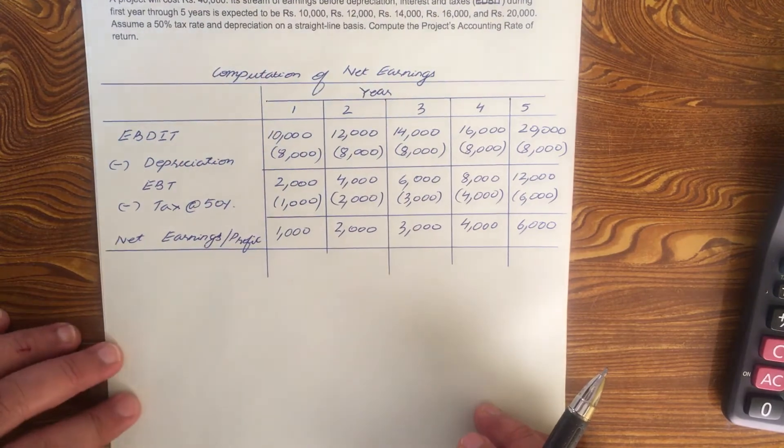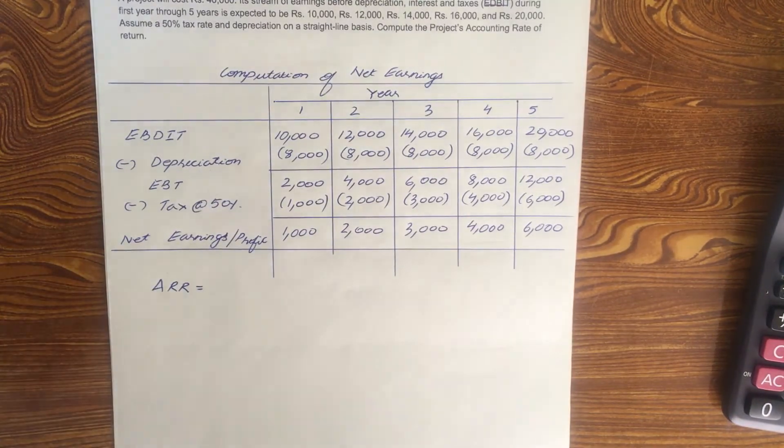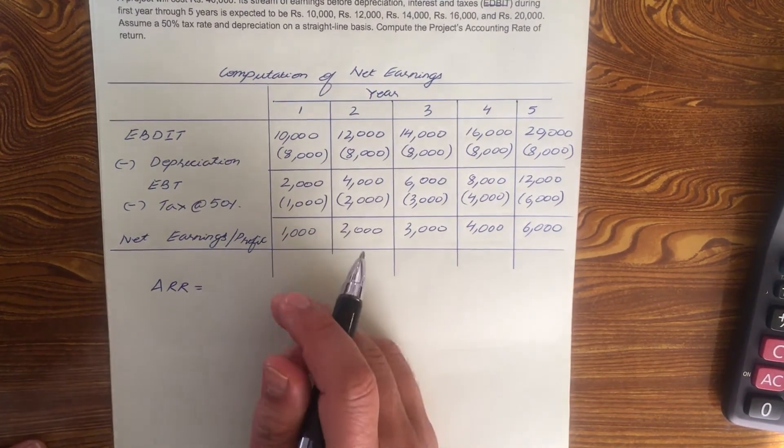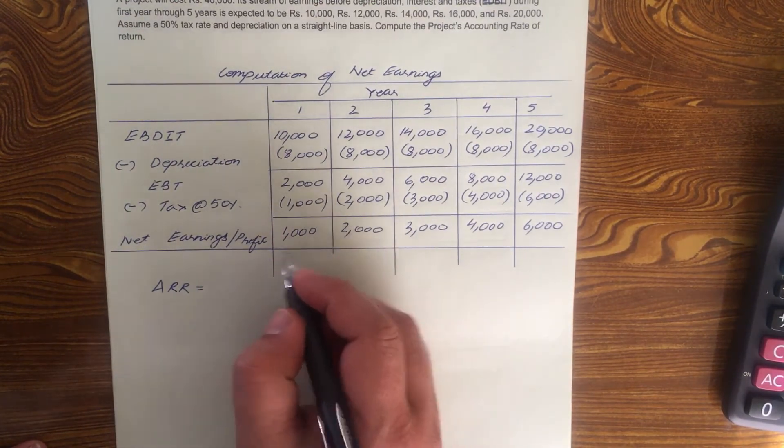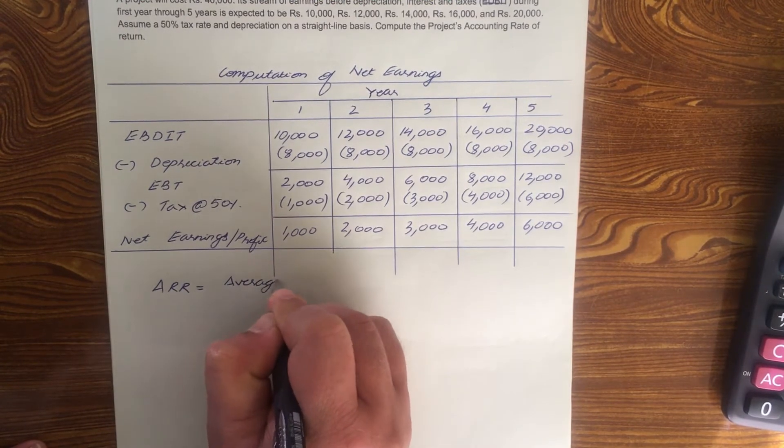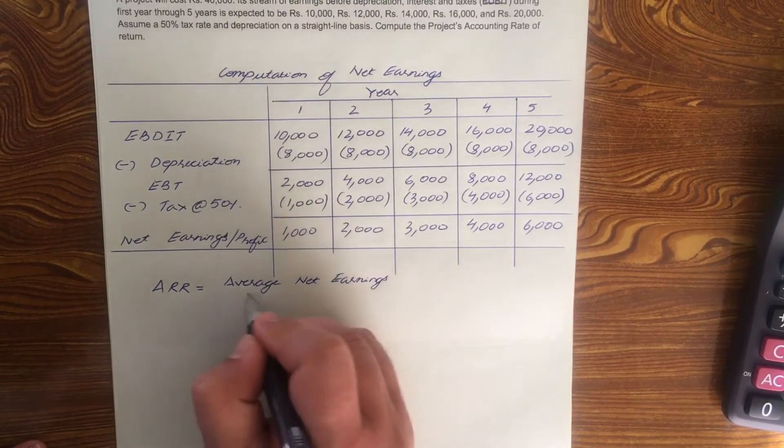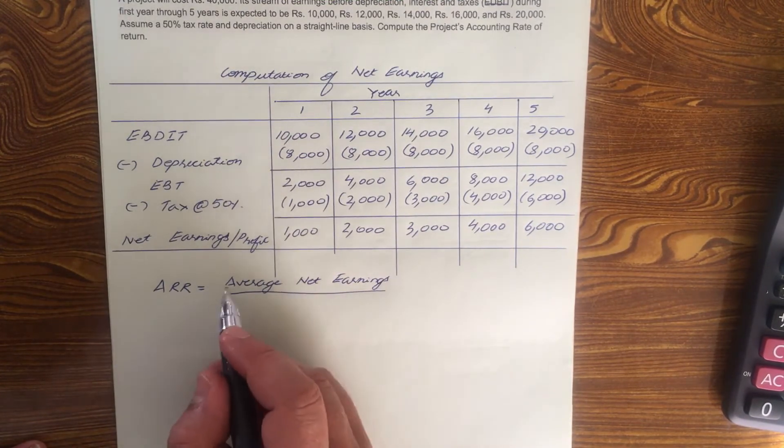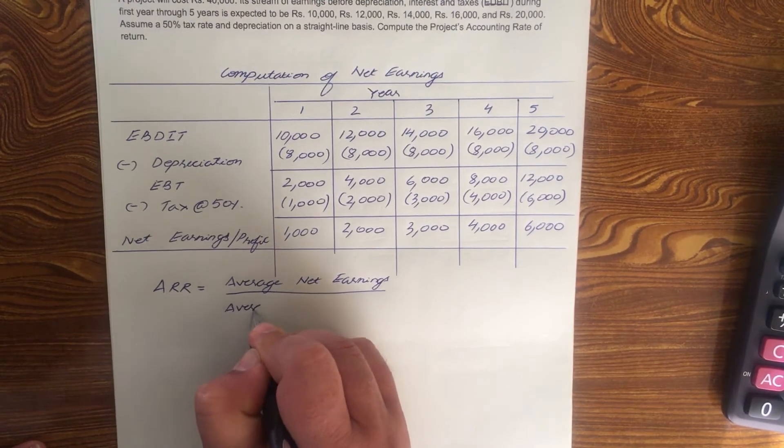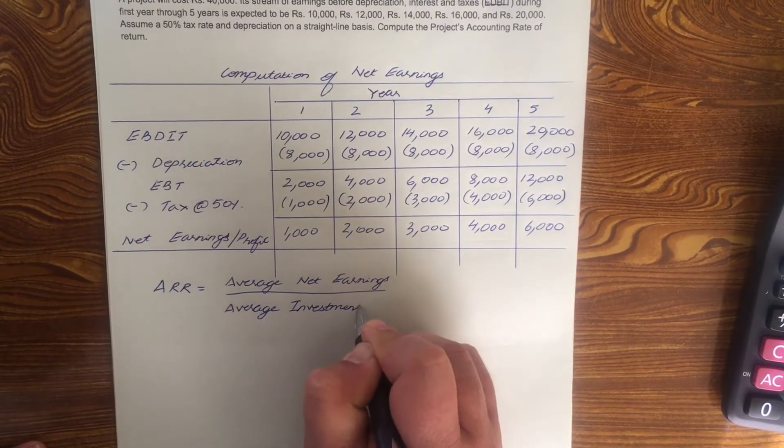What is the next step? Next step is ARR, accounting rate of return. By the way, it is also known as return on capital employed. ARR, average rate of return is also known as return on capital employed. Here you show the average net earnings. Remember, under ARR we are dealing with accounting profits and not cash flows. Average net earnings divided by average investment or average capital expenditure.